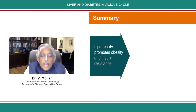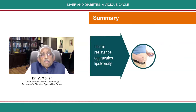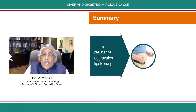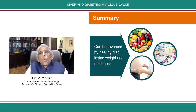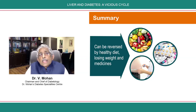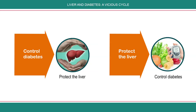To summarize: lipotoxicity promotes inflammation and insulin resistance, which can lead to both diabetes and fatty liver. Insulin resistance aggravates lipotoxicity and is usually due to obesity, weight gain, and uncontrolled diabetes — and insulin resistance in turn can produce diabetes. All these are eminently reversible by lifestyle changes, a healthy diet, losing weight, doing enough exercise, and controlling your diabetes. My message to you is: control diabetes and protect the liver, protect the liver and control diabetes, as both are eminently amenable to treatment.